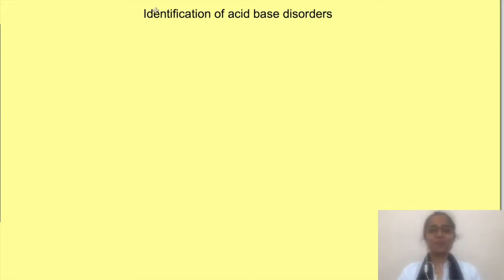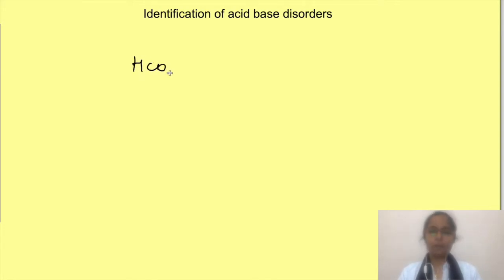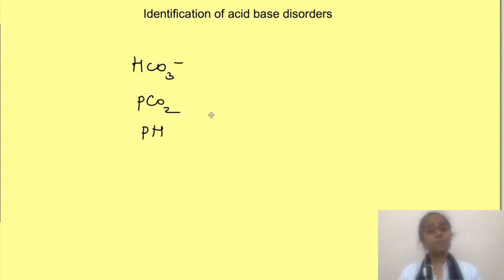Hello and welcome to Physiology Open. In this video we will see how to identify various simple and mixed acid-base disorders based on bicarbonate concentration, partial pressure of carbon dioxide, and pH. First we will check out a little basics and then we will go straight to different scenarios.